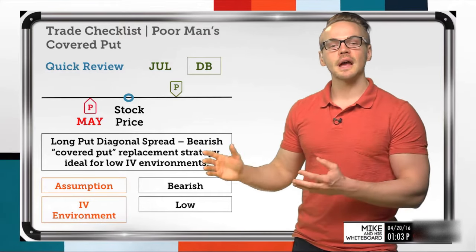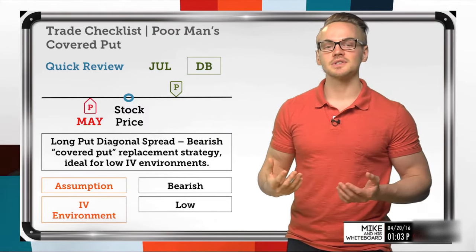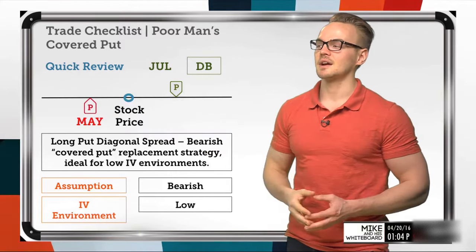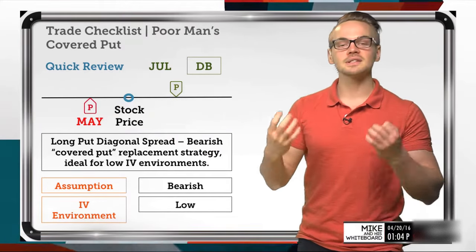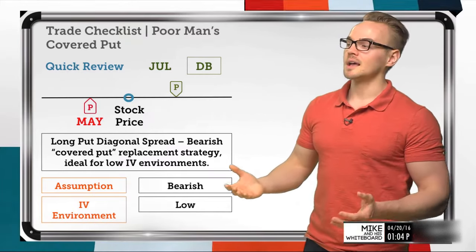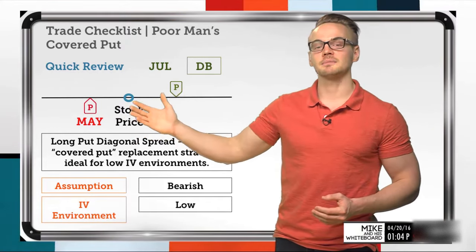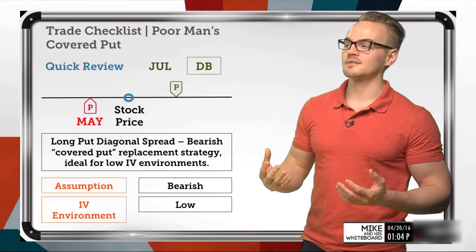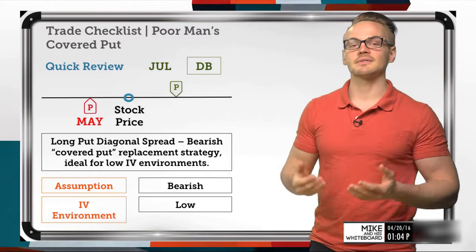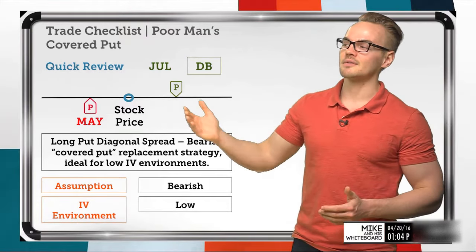There's going to be more extrinsic value in longer-dated options. Since the July option has a longer expiration than our May option, there's going to be more extrinsic value in that July option. An increase in implied volatility — which is an aspect of extrinsic value — is going to increase the value of our July option much more than that of the May option, which is why this is a long vega trade. We want the IV environment to be low so that we have a better chance of implied volatility increasing, which would increase the value of this spread.